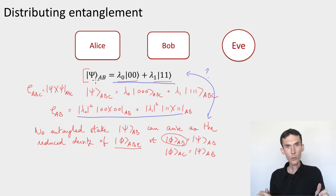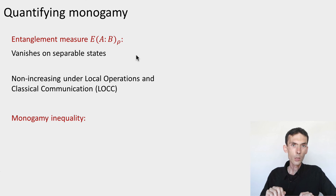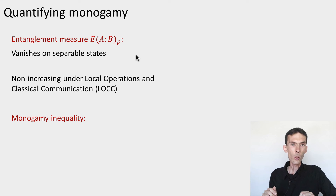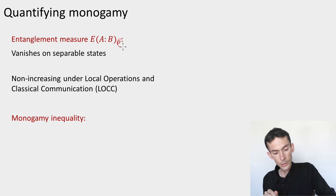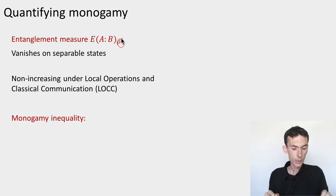Let's end this module by understanding how we would quantify monogamy. There is such a thing as a measure of entanglement — in fact, there are many measures, and we'll see some of them later in the course. You already saw one: the Schmidt rank. This is a number associated to any pure bipartite state such that if it equals 1 the state is product, and if it is strictly larger than 1 the state is entangled — and vice versa. For mixed states, the Schmidt rank is not well-defined and we need more complicated entanglement measures.